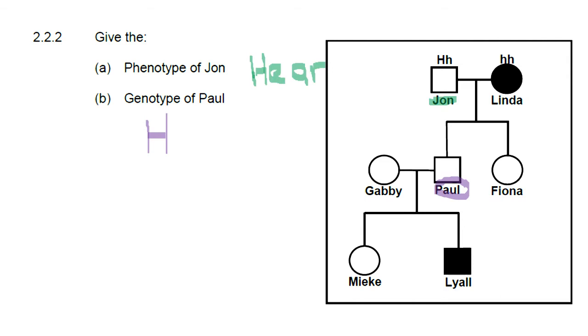Right so Paul, if you have a look at it, he has got a capital H. Now he got that capital H from Jon over there. And the only thing Linda his mom could give him, the only possibility, is a small letter h. That means Paul's genotype is then heterozygous.